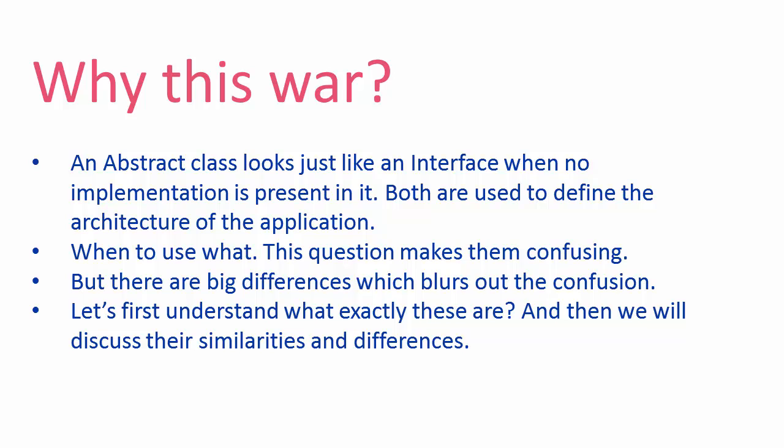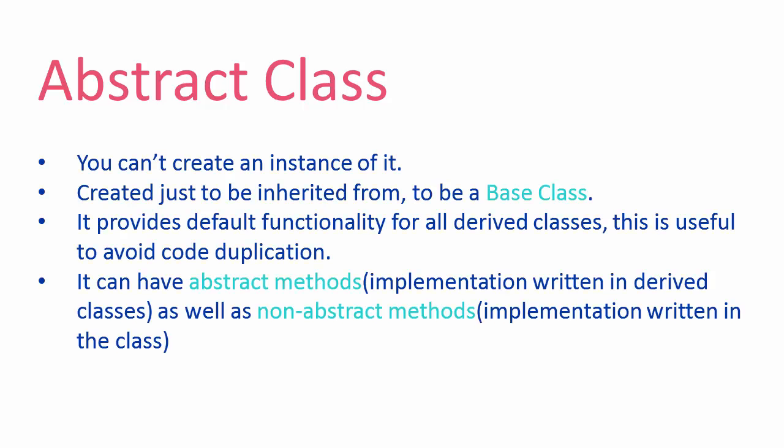Going further we will learn about the differences between these two, which actually clears out the confusion. So let's first understand what exactly these are. An abstract class is related to defining the architecture of the application. You cannot create an instance of it — it is just created to be a parent class, or base class, to derived classes. An abstract class provides default functionality for all the derived classes, which helps remove code duplication.